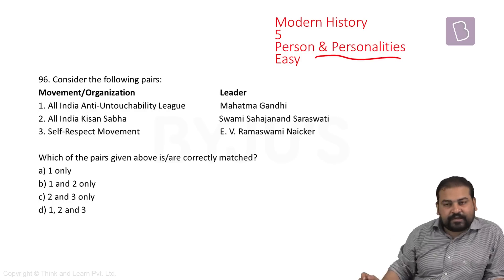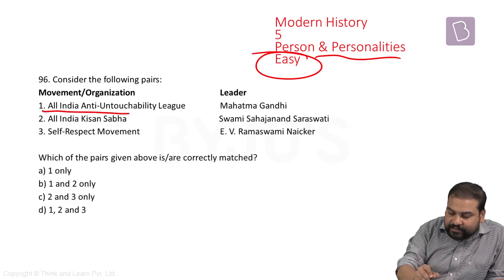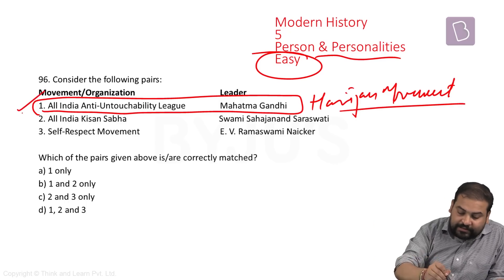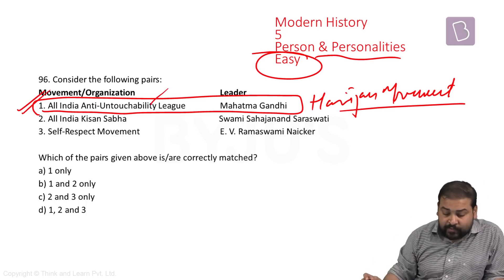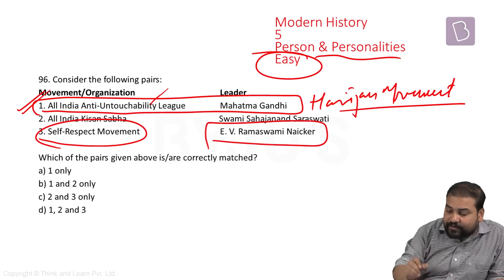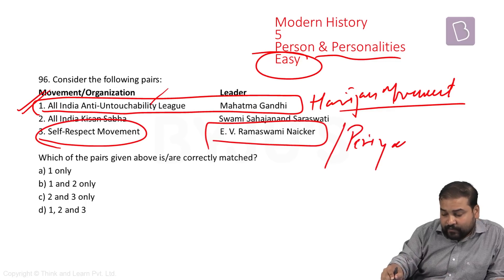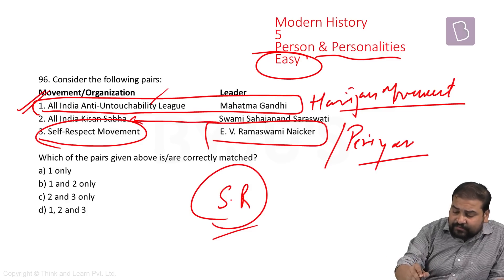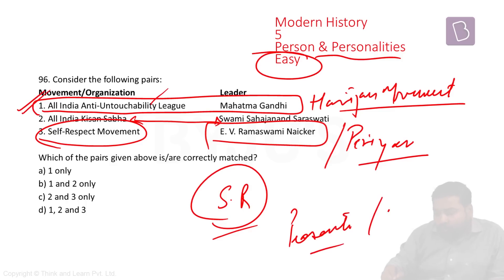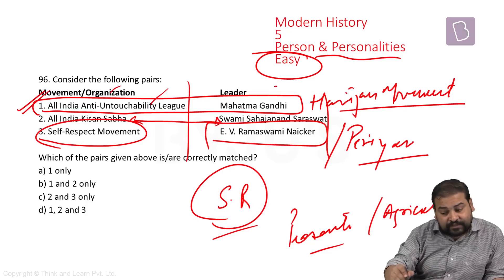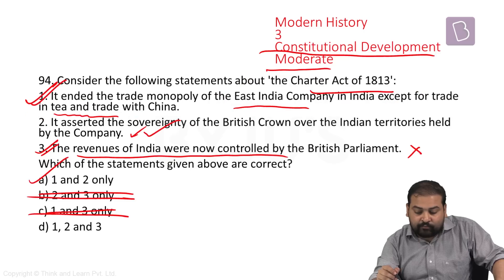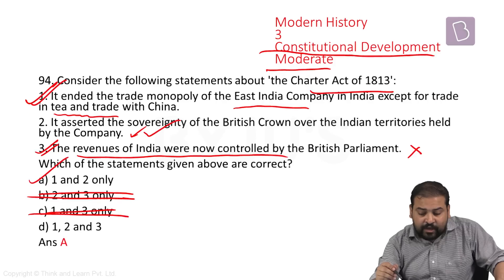The last modern history question is on persons and organizations — I'm putting it as easy. All India Untouchability League: Mahatma Gandhi during his Harijan movement after calling off the civil disobedience movement. The Self-Respect Movement was started by E.V. Ramaswami Naicker or Periyar, whom we study in socio-religious reform movements. All India Kisan Sabha: Swami Sahajanand Saraswati — studied in all chapters on peasants or agriculture. All three are very prominent names and organizations, so the answer is D. From modern history: one easy and four moderate questions.